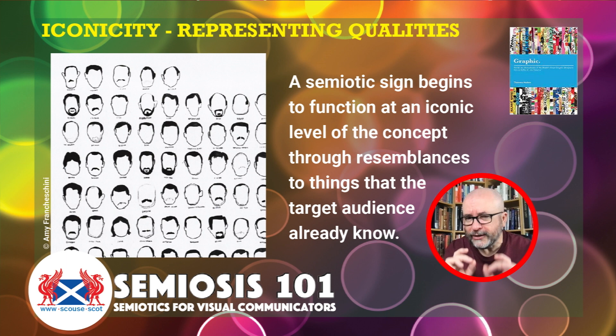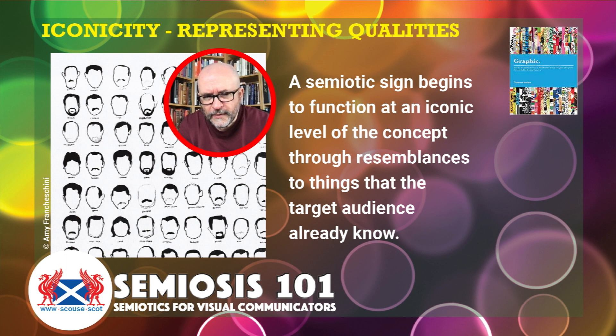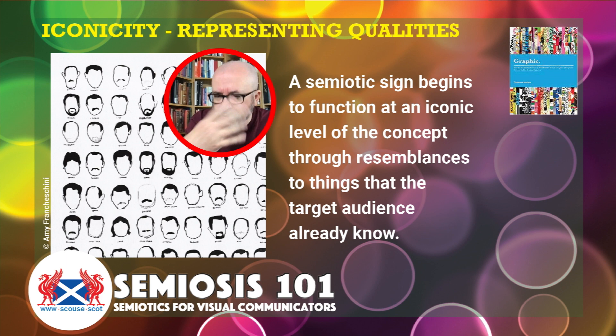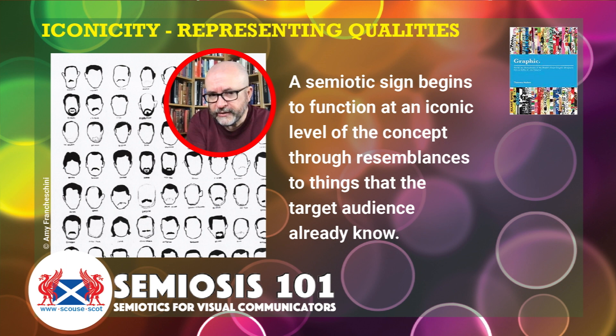A semiotic sign begins to function at an iconic level through resemblances to things that the target audience already know. In Amy's quick sketches, just a few iconic lines, shapes and different weights of colour — thin lines, heavy lines, heavy black shapes — you can convey something that's not there, which is basically a human figure. There are no eyes, no nose, no mouth, but through gestalt we can fill in the rest of the details because we know what a face looks like, and that resembles faces to us. That resemblance is at the iconic level.